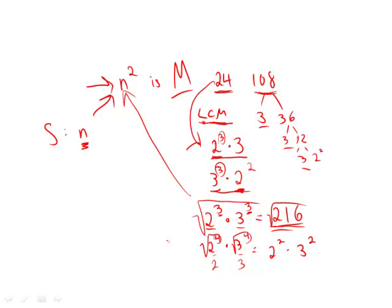And so we end up getting 2 squared times 3 squared, which is 36. Now, n can be every multiple of 36. So 36, 72, 108.